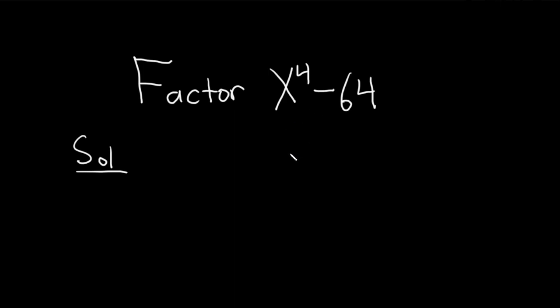This is actually the difference of squares because x to the fourth is the same thing as x squared squared. So this becomes x squared squared—you multiply two times two to get four. Minus, and then you can write 64 as 8 squared.